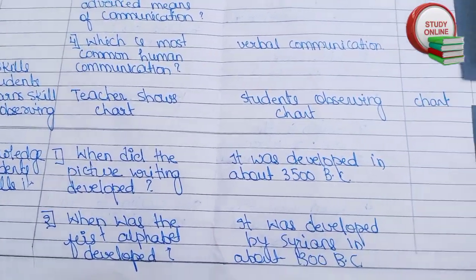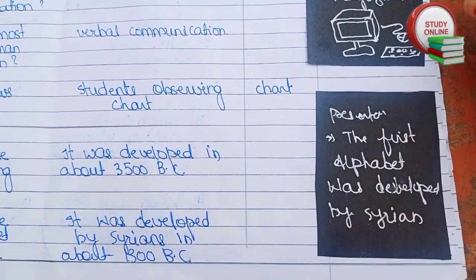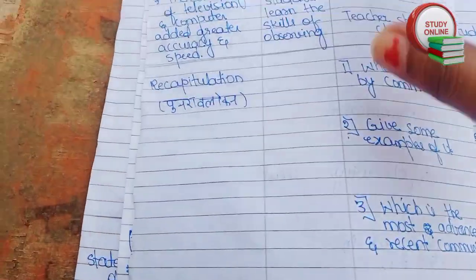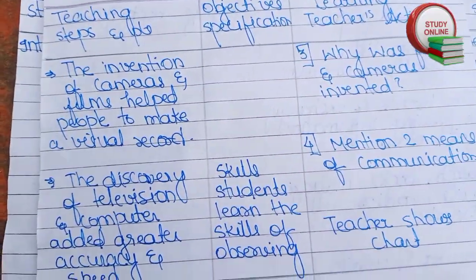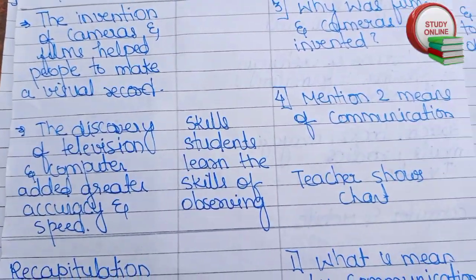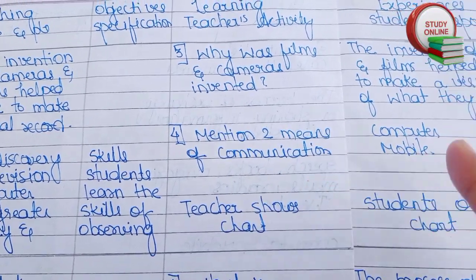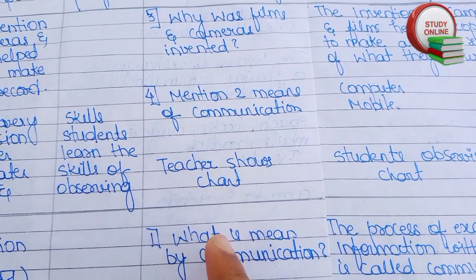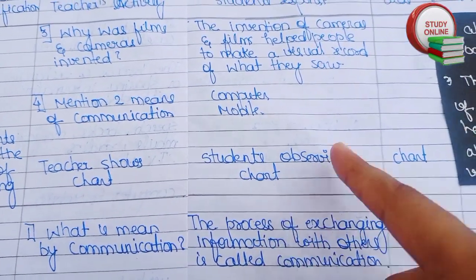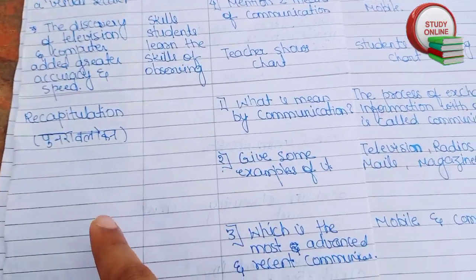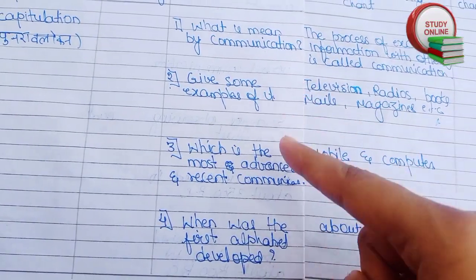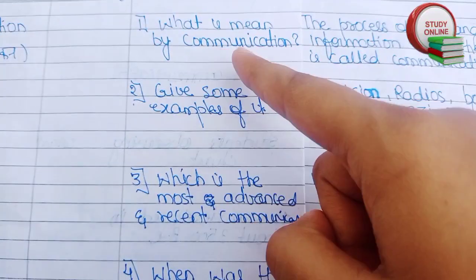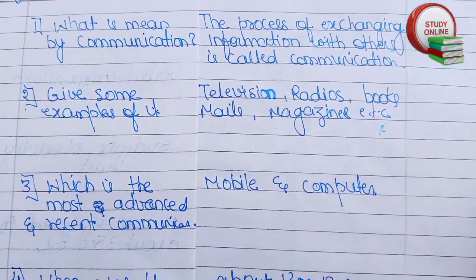We repeat the same process for presentation two. Here you can see the rest of the presentation two part — the blackboard work, teacher shows chart, students observe chart, and teaching aid is chart. After that comes the recapitulation part, where I've added four questions. You can extend it up to five questions.